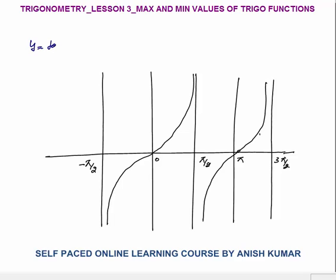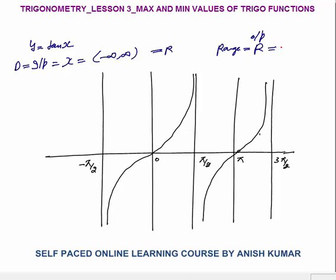Next is y = tan x. The domain or input values — you can put any values of x from minus infinity to infinity. Surprisingly, the range for tan x is also ℝ, from minus infinity to infinity. This means you can get any output value: tan x can be 50,000 or 0.1.